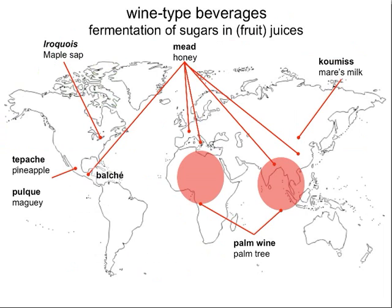We're about to start getting into wine, but let me first break apart our fermented beverages into two classes. Let's start with the wine types. In a wine-type beverage, we're talking about the fermentations of sugars in juices — simple sugars. Starch is a polymer of glucose, but that glucose is not immediately available for consumption by the fermenting organisms, so that's a different kind of beverage. Wine-type beverages are those in which the organisms ferment the sugar already present in the juice.